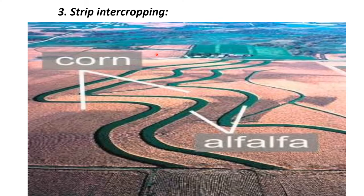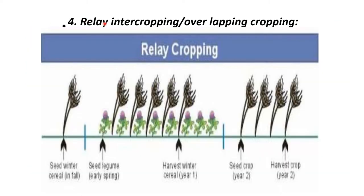Strip intercropping is growing two or more crops simultaneously in different strips wide enough to permit independent cultivation but narrow enough for the crops to interact agronomically. Example is corn and alfalfa, or ragi and groundnut. The fourth one is relay intercropping, or overlapping crops — growing two or more crops simultaneously during part of each one's life cycle. A second crop is planted after the first crop has reached its reproductive stage but before it is ready for harvest. Example is cereal and pulses, or potato and wheat.